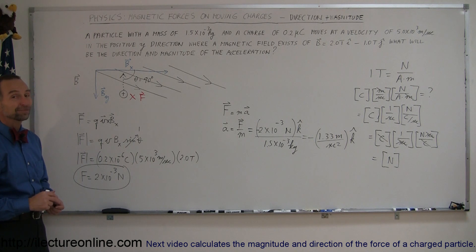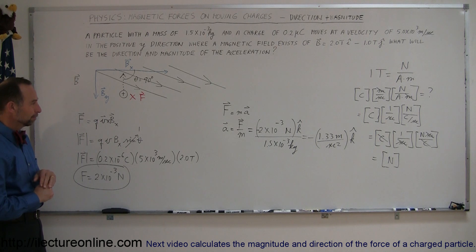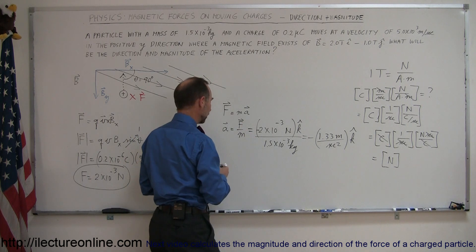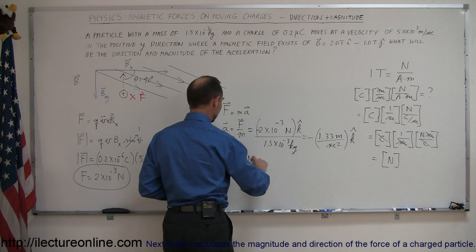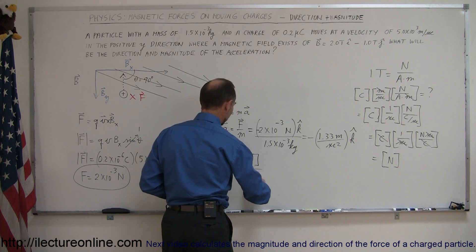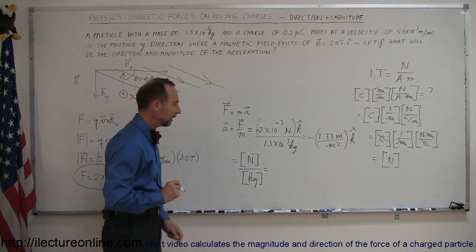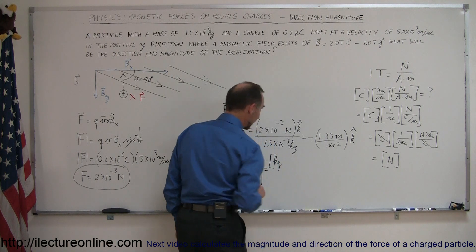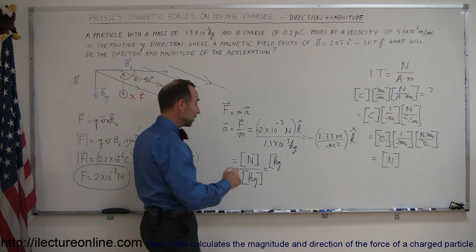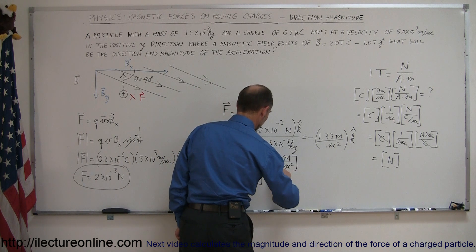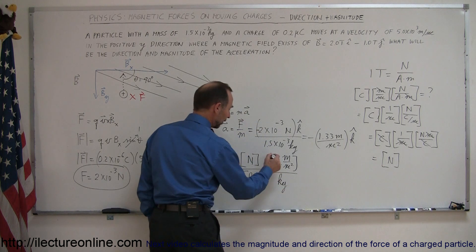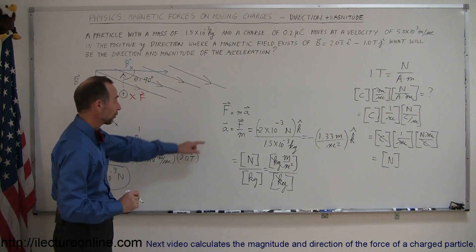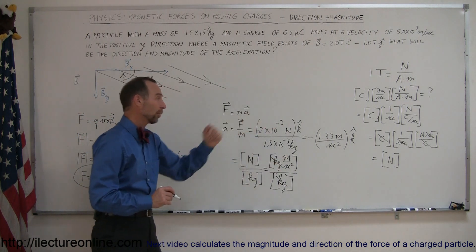Now for the acceleration units: acceleration is Newtons per kilogram. A Newton is kilograms times meters per second squared. So Newtons divided by kilograms gives kilograms times meters per second squared divided by kilograms — the kilograms cancel — leaving meters per second squared. So the units of acceleration do come out correctly to meters per second squared.